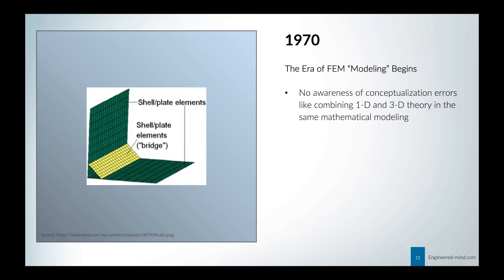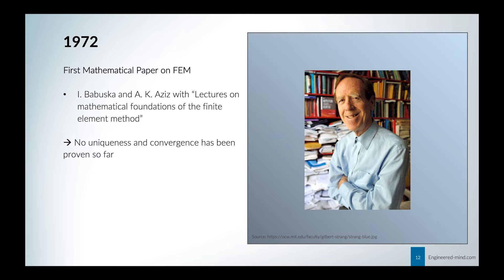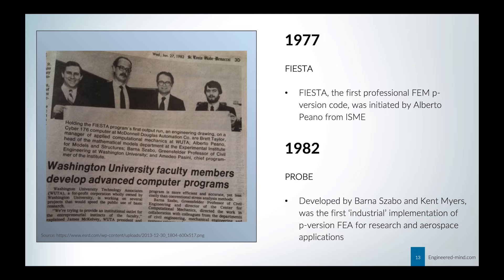In 1970, people could combine 1D and 3D theory in the same mathematical modeling. Two years later, we have the first mathematical paper on the finite element method by Babushka and Aziz — beforehand, no uniqueness and convergence had been proven. On the right-hand side you can see one of the fathers of the finite element method, the famous Gilbert Strang. Five years later, we have the first professional finite element P-version code called Fiesta, and then a pre-version FEA software tool called Probe for aerospace applications.